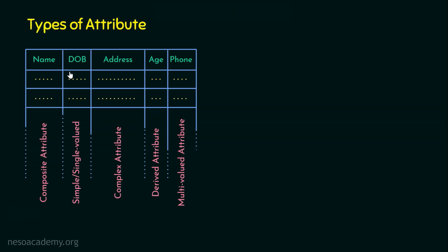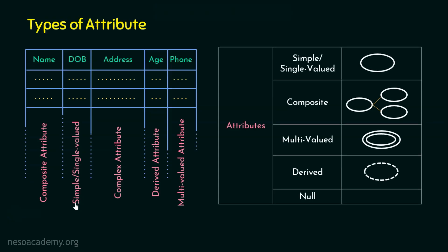When talking about ER diagrams, the representation of attributes is not the same for all types. Simple or single-valued attributes are represented differently from complex attributes. Derived attributes like age are represented using a dotted oval or dotted ellipse symbol. Multi-valued attributes are represented using a double oval or ellipse symbol. Composite attributes have their own representation as well. There can also be a null attribute — for example, if a person has no phone number, that field will be null. I will explain the different notations for attribute types elaborately when we deal with ER diagrams.